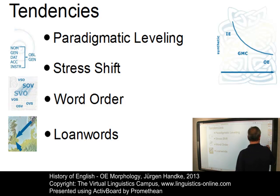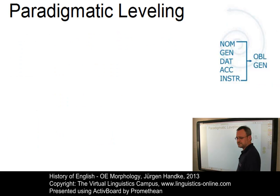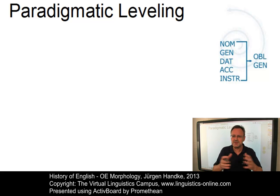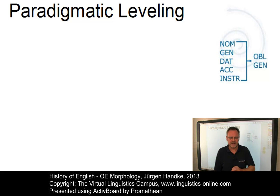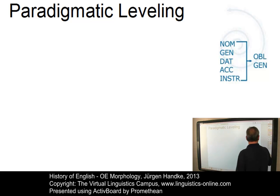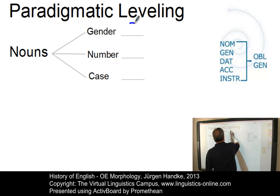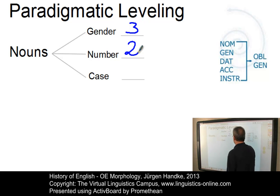Since loanwords have to be made compatible with the inflectional system of the borrowing language, the simplest solution was to drop the inflections altogether, a procedure that had already been used to some extent with Latin words in Old English. Let us look at the first two aspects in more detail. Most paradigms in Old English did not contain the maximum amount of differentiation. The standard inflectional categories associated with nouns are gender, number and case.